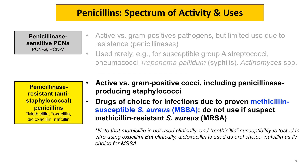With regard to the penicillinase-resistant penicillins, these are also narrow-spectrum against gram-positive cocci, namely staphylococci, including penicillinase-producing staphylococci. These are the drugs of choice for infections due to proven methicillin-susceptible Staphylococcus aureus, or MSSA. These agents should not be used if the clinician suspects methicillin-resistant Staph aureus, or MRSA.